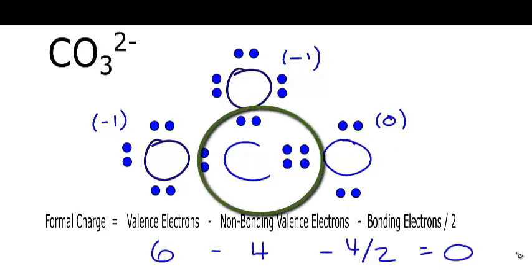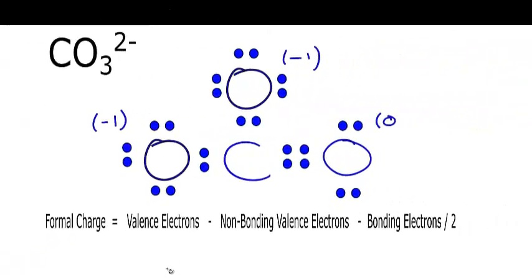Now let's do the carbon in the center of the molecule. Carbon has 4 valence electrons. We put the 4 here. We subtract the non-bonding. All of these electrons are between atoms. They're involved in chemical bonds. So we have a 0 for non-bonding. And the bonding electrons, I have 2, 4, 6, 8, which I will divide by 2. 4 minus 0 minus 4 is 0. So the formal charge on the carbon in the center, that is 0.